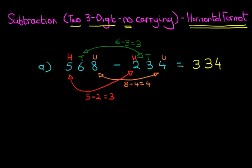So 568 minus 234 is 334. So when there is no carrying, it really is very simple. Let's work through one more example.